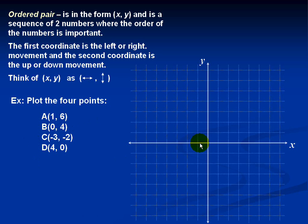In order to plot points, we shall start at the origin. In order to plot point A, we notice that the X coordinate is 1, so I'm going to move 1 place to the right. The Y coordinate is 6, so I'll move up 6 units: 1, 2, 3, 4, 5, 6. And there's my point for A.